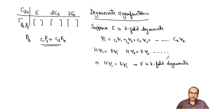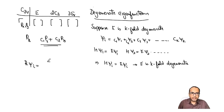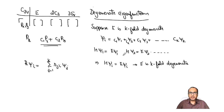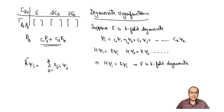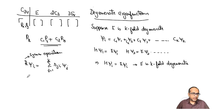Now, if we have a symmetry operation R acting on psi_i, we can express this as a linear combination: R*psi_i equals summation over j from 1 to k of r_ji * psi_j, because E is k-fold degenerate. So we can express psi_i as k linear combinations of different eigenfunctions, where R is any particular symmetry operation.